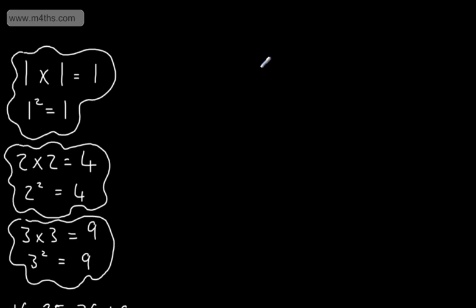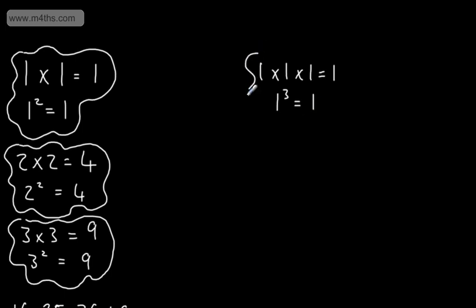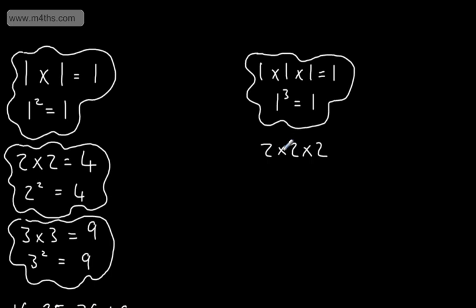Let's now look at cube numbers. If I start with 1, 1 times by 1 times by 1 is going to give me 1. We can say 1 cubed, or 1 to the power of 3, is 1. If we take 2 and we cube it, we will have 2 times by 2 times by 2. A common error is when students say that this is 6. 2 times by 2 is 4, times by 2 is 8. So we can say 2 cubed, or 2 to the power of 3, is going to give me 8.